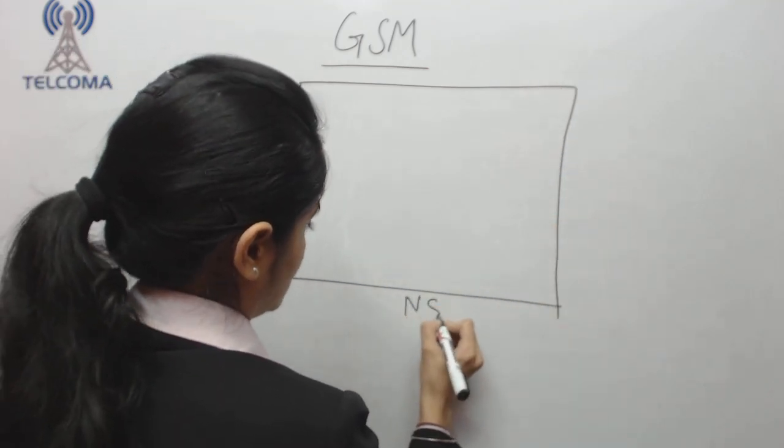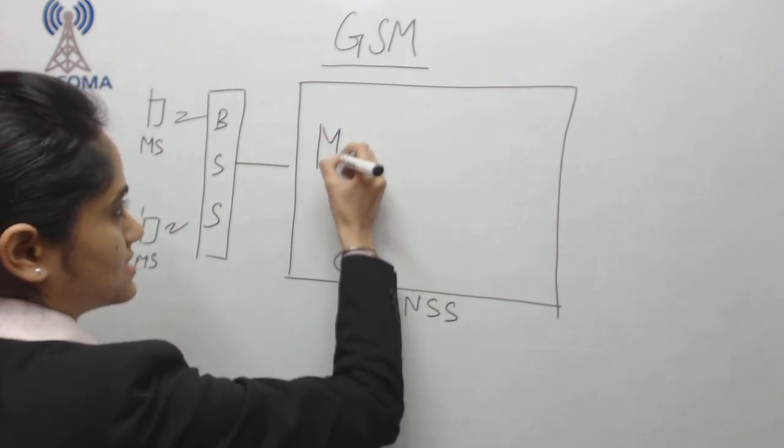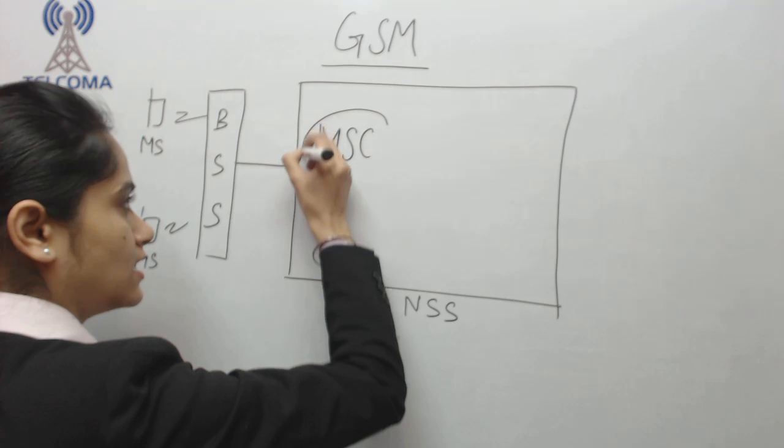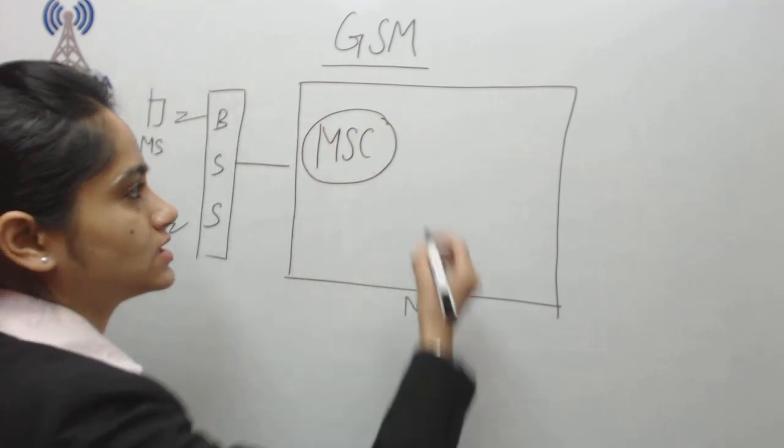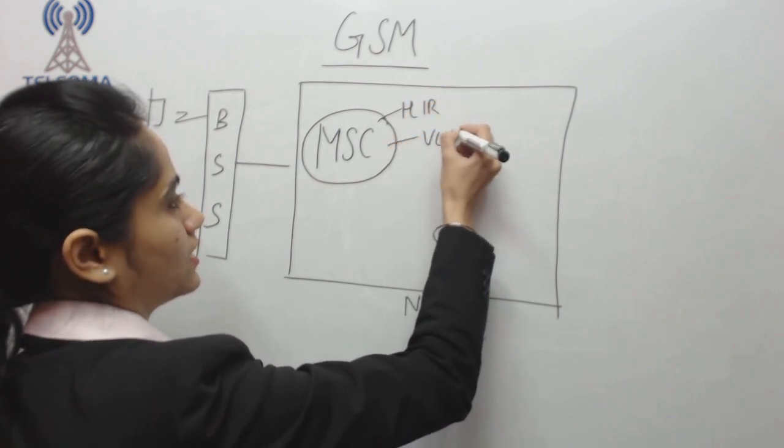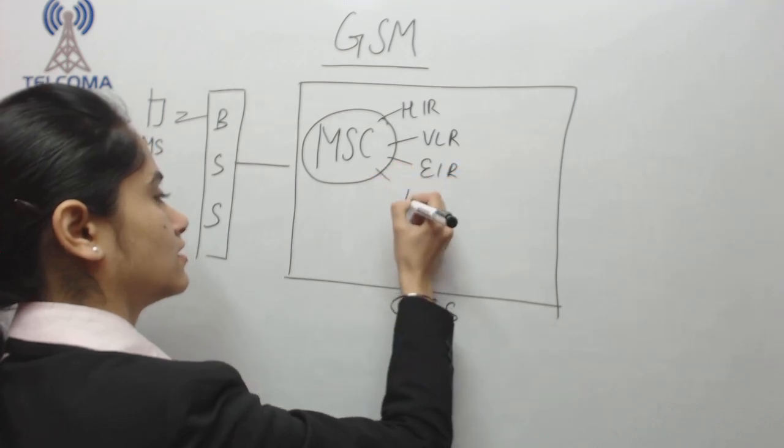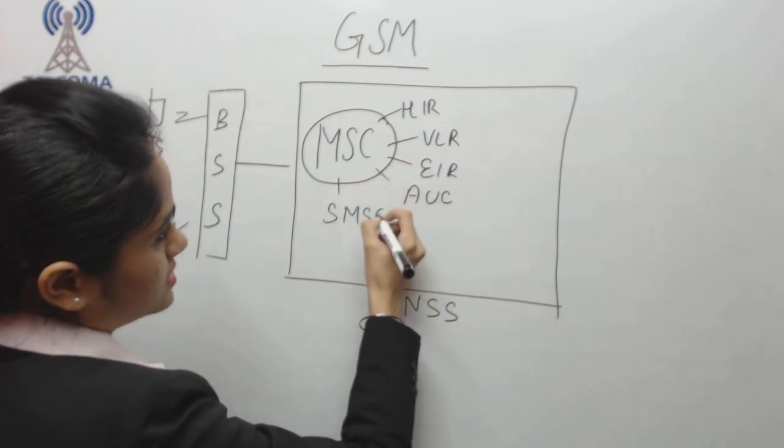Now this is the controller of the complete network. With this we have HLR, we have connected VLR, EIR, AUC, connected to SMSC.